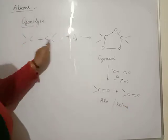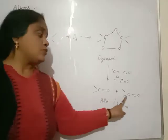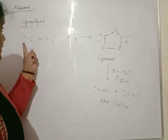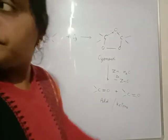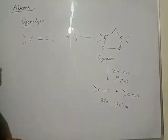If this is symmetrical, two moles are formed. If these are unsymmetrical, two different forms are formed. This is ozonide.